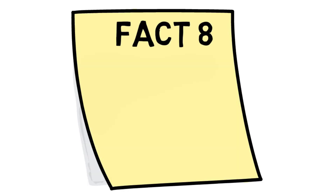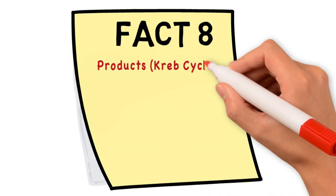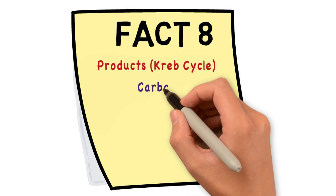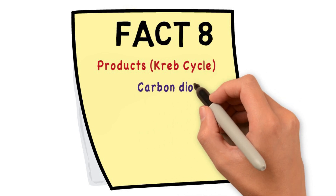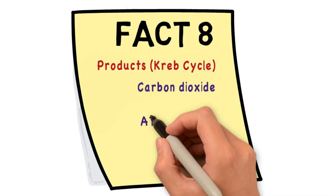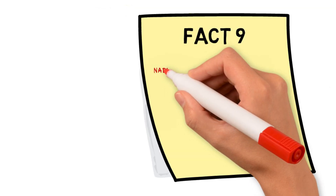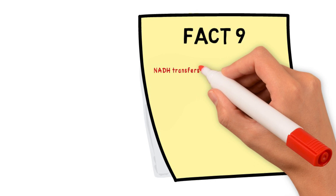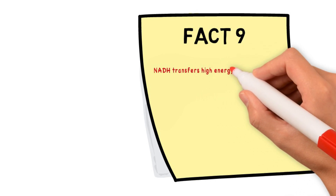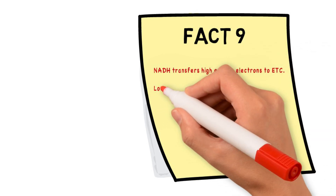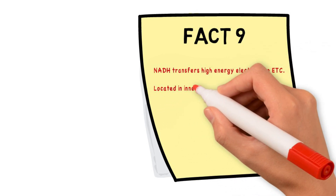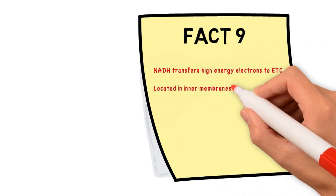Fact eight: the products of Krebs cycle are carbon dioxide, ATP — not very much of it, one per cycle — but many NADH molecules.